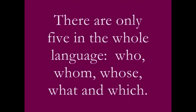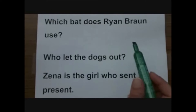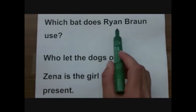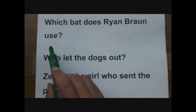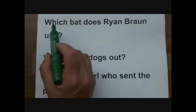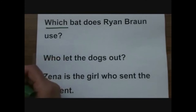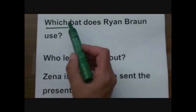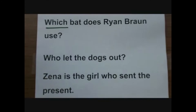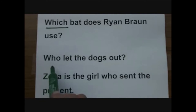An interrogative pronoun is used to form a question. There are only five in the whole language: who, whom, whose, what, and which. For example: 'Which bat does Ryan Braun use?' — 'which' is the interrogative pronoun, the first word in a question. An interrogative sentence requires an interrogative pronoun. 'Who let the dogs out?' — 'who' is your interrogative pronoun.